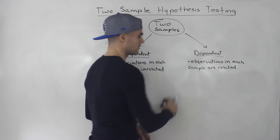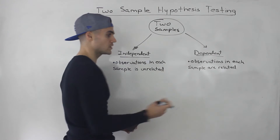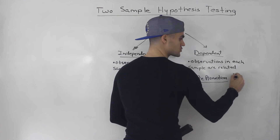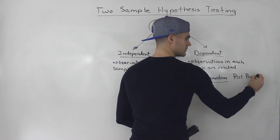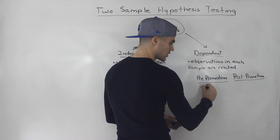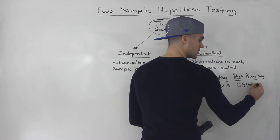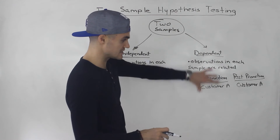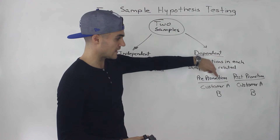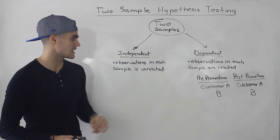You could also have dependent samples when testing a promotion. For instance, you could test pre-promotion spending versus post-promotion spending for the same customer in a store. You'd find how much customer A spent before the promotion and how much that same customer spent post-promotion, then repeat for customer B, and so on. These two samples are related by the same customer.